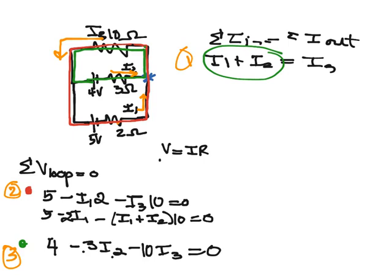Now I want to simplify that. So I have 5, okay, minus, I have negative 2 I1 minus 10 I1, so that's minus 12 I1, and then minus 10 I2 equals 0.